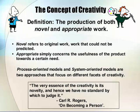The concept of creativity. Definition: the production of both novel and appropriate work. Novel refers to original work — work that cannot be predicted. Appropriate simply concerns the usefulness of the product toward a certain need. Process-oriented models and system-oriented models are two approaches that focus on different facets of creativity. As Carl R. Rogers wrote in On Becoming a Person: 'The very essence of creativity is novelty, and hence we have no standards by which to judge it.'